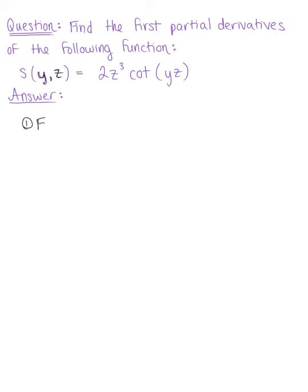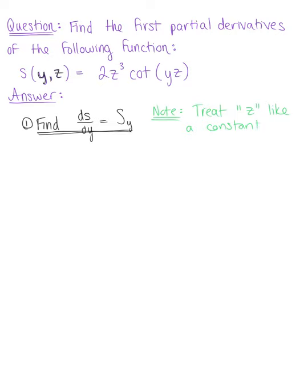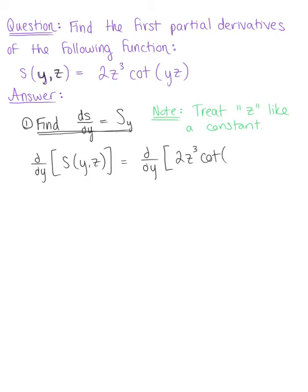The first one is to find the partial derivative of the function s with respect to y — we can alternatively write this as s sub y. One thing to keep in mind as we proceed is that if we're differentiating with respect to y, we'll treat z like a constant, a real number. So we're taking d/dy of the given function s of yz, which gives us d/dy of 2z cubed cotangent of yz.